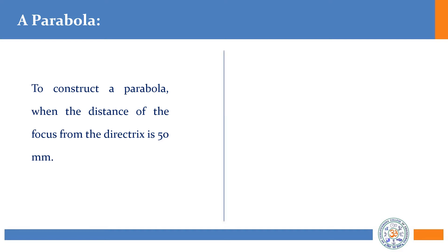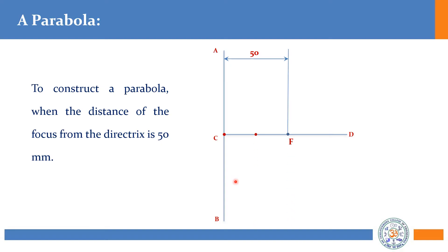As usual, we will proceed with the directrix. First, draw AB as the directrix line and mark C, then draw the axis line CD. The axis line is CD, and 50 mm is the given distance between the directrix (the fixed line) and the focus (the fixed point). At exactly the midpoint — 25 mm — I have marked the vertex.